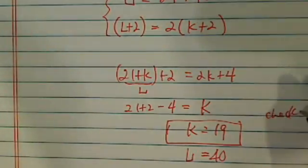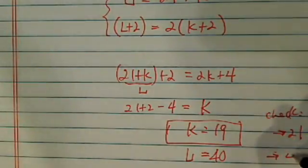Now let's check over here. So in two years, K is going to be 21, and this would be 42, and it's exactly two times.